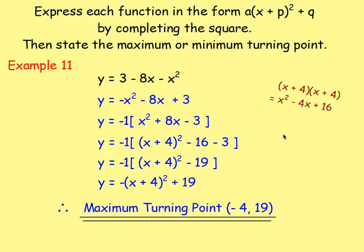Example 11 was slightly different because we had a negative coefficient for x squared. First, rewrite it as negative x squared minus 8x plus 3. To get one x squared, take out negative one as a common factor. Inside the square brackets, complete the square: (x + 4)² minus 16, keep the negative three, then multiply out the square brackets. Because you've got a negative for x squared, the graph is a sad face, so you have a maximum turning point — in this case, at (-4, 19).